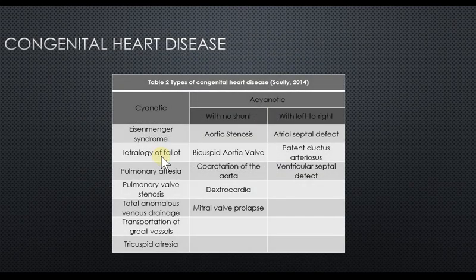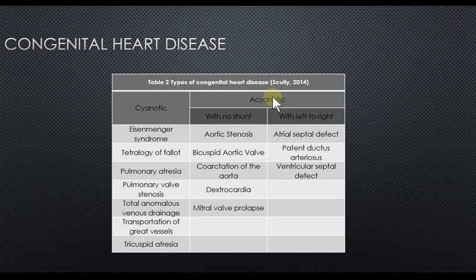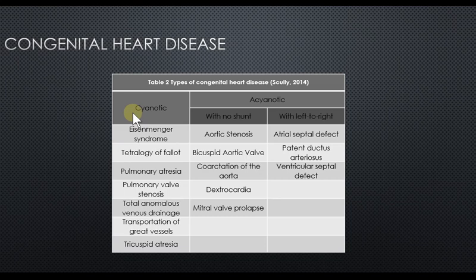The last part of the lecture covers congenital heart disease, which is one of the most common developmental anomalies. It can be classified into two major types: acyanotic and cyanotic. Acyanotic can be sub-classified into left-to-right shunt and those with no shunt. Patients with cyanotic congenital heart disease generally have more signs and symptoms.